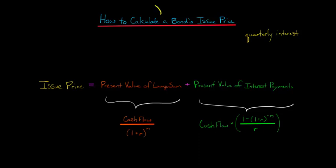In this video, we're going to talk about how to calculate the issue price of a bond when the bond pays interest on a quarterly basis. The issue price is the present value of the lump sum that the investor in the bond would receive when the bond matures, that face value amount, plus the present value of the interest payments that are made along the way.